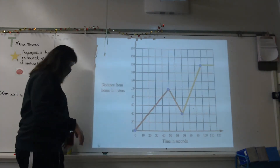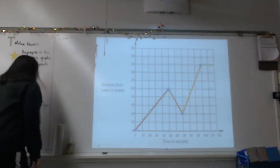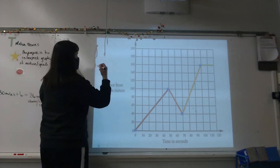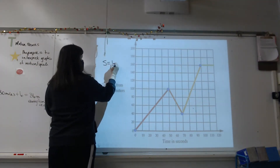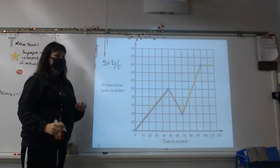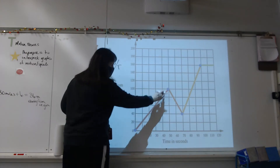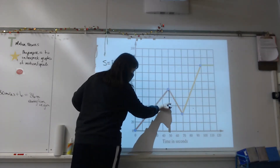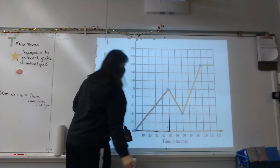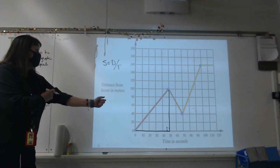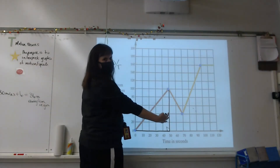Here's our graph again, and we're going to calculate the slope of each chunk of the line. To do the slope we need our formula: distance divided by time. I'm going to make a right triangle connecting from my starting point to my ending point, so I can see how much distance I covered on the y-axis and how much time passed on the x-axis.